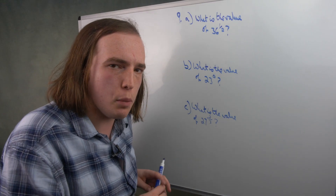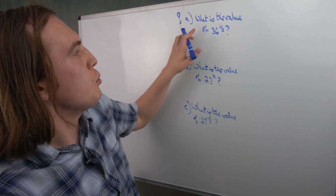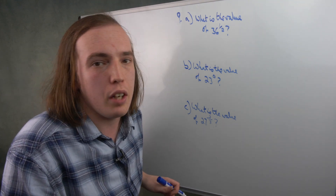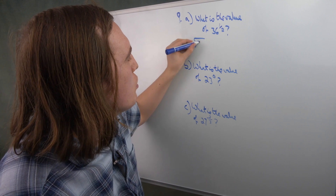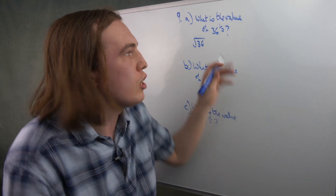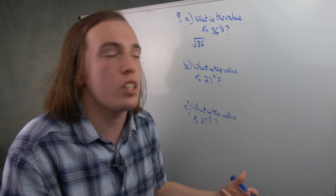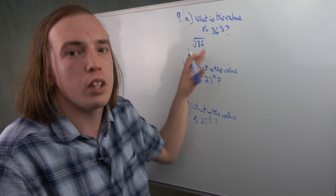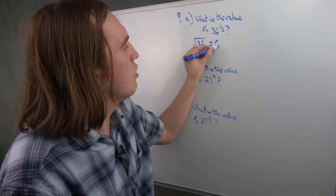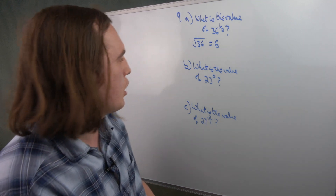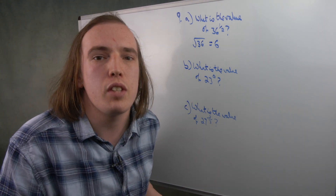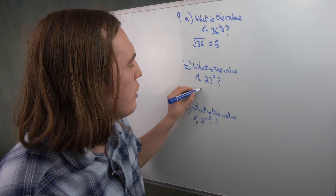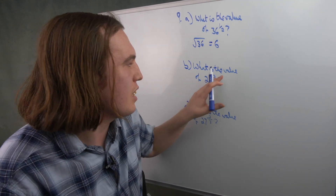Question 9 tests our knowledge of indices. First: what is the value of 36 to the power of a half? Another way of writing to the power of a half is the square root. In fact, if you have anything to the power of a fraction, the denominator tells you what kind of root it is: to the third means cube root, to the fourth means fourth root. So to the half means square root. The square root of 36 is simply 6. Next: what is the value of 23 to the power of 0? Anything to the power of 0 simply has a value of 1 — it doesn't matter what the base is.